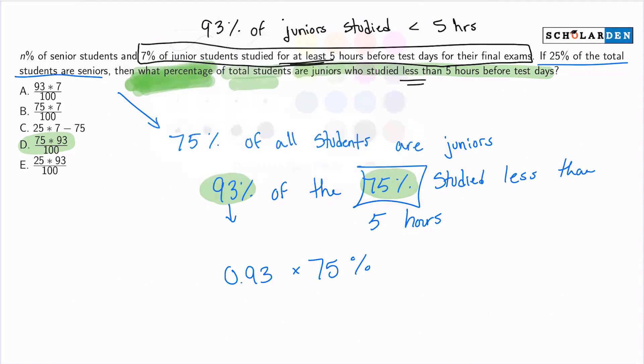So in order to see what this is equivalent to in my answer choices, I notice that nothing is written as a decimal. So I'm going to convert my decimal into a fraction out of 100. So that will be 93 out of 100 multiplied by 75 percent. Again, I'm keeping that percent there because I want to keep my units in percent. So with that said, that can be expressed as 93 times 75 all over 100.